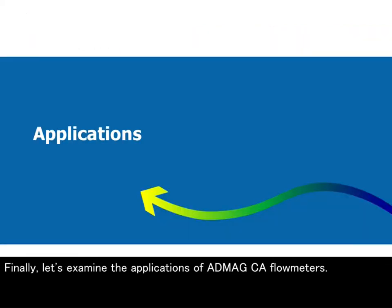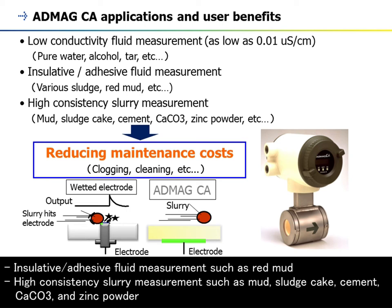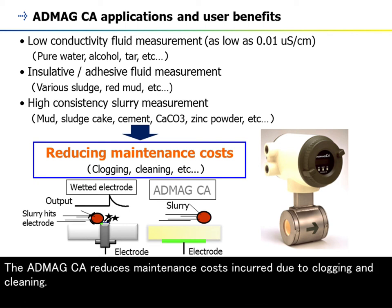Finally, let's examine the applications of Abmec CA flow meters. The Abmec CA flow meter can be used for the following applications: low-conductivity fluid measurements such as pure water, alcohol, and tar, with conductivity more than 0.01 microsiemens per centimeter; insulative or adhesive fluid measurements such as red mud; and high-consistency slurry measurements such as mud, sludge cake, cement, CaCO3, and zinc powder. The Abmec CA reduces maintenance costs incurred due to clogging and cleaning.